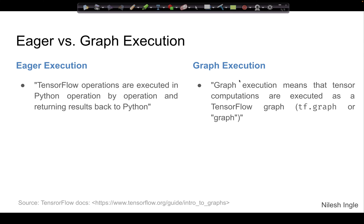For example, let's say you created a function to add two scalar numbers in Python and you run it by calling the Python function directly — that would be eager execution. However, if you pass that function to tf.function in TensorFlow, it creates a graph.